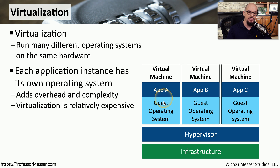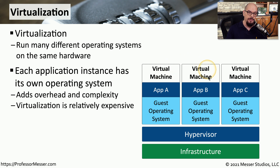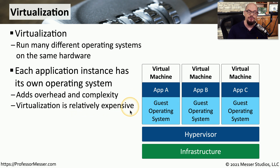On top of the hypervisor are guest operating systems. You might have one virtual machine with an operating system and an application, a separate virtual machine with another guest OS and application, and a third virtual machine with yet another guest OS and application. With every virtual machine, we're having to run an entire guest operating system, which requires additional CPU, additional storage, and additional memory for each one — even if we're running similar guest operating systems. From this perspective, virtualization is considered relatively expensive because of the resources required to have each separate operating system running simultaneously.